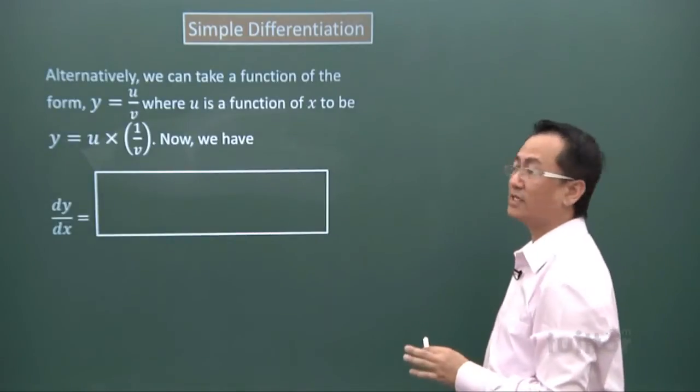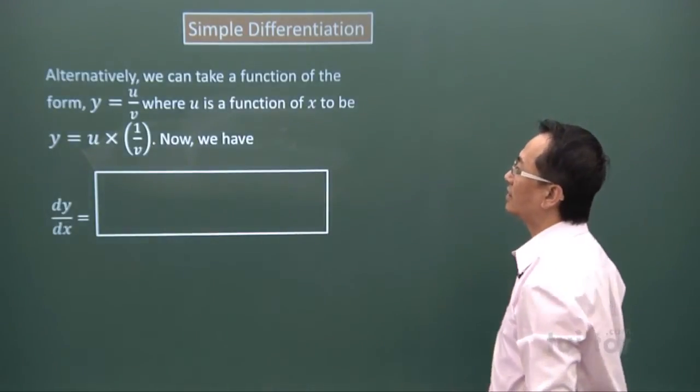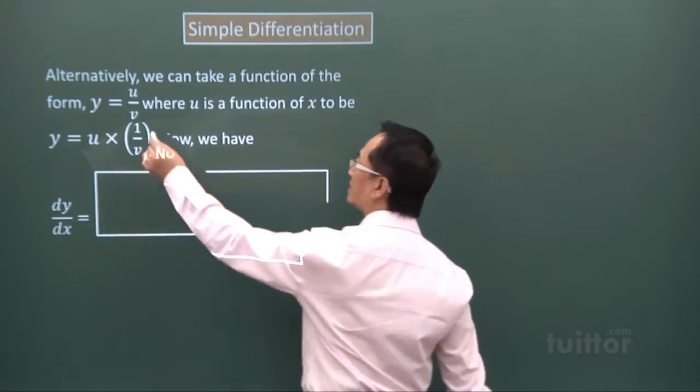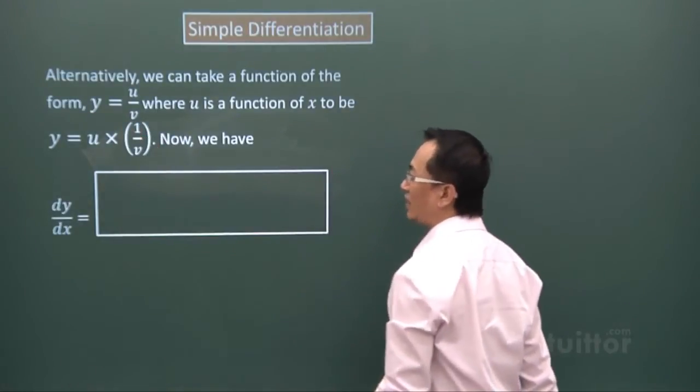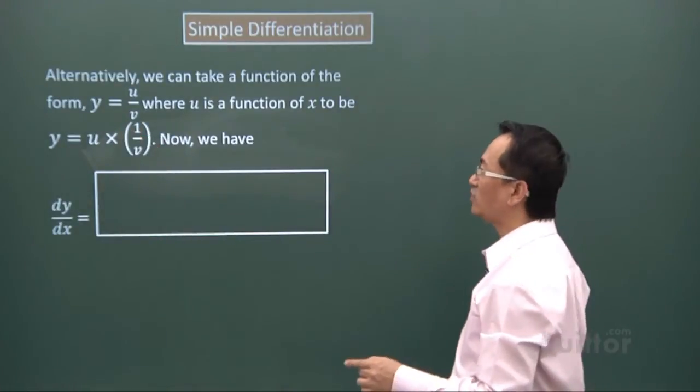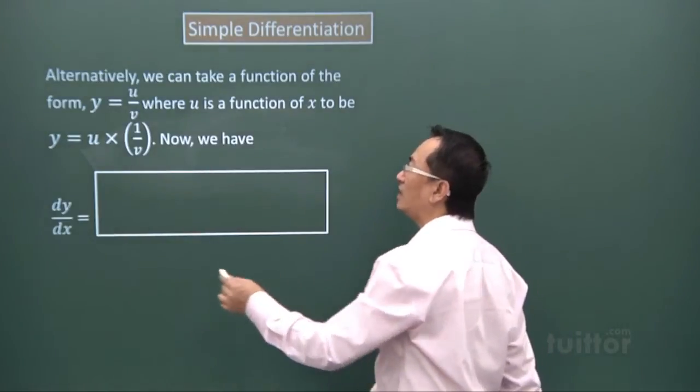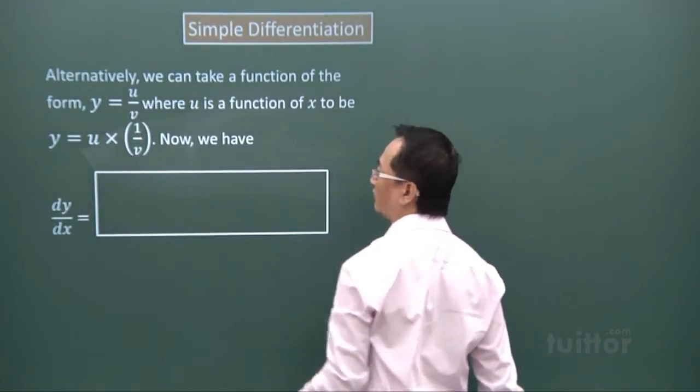I'll give you an alternative form. So instead of this u over v, now I've changed the expression slightly differently to u times one over v.